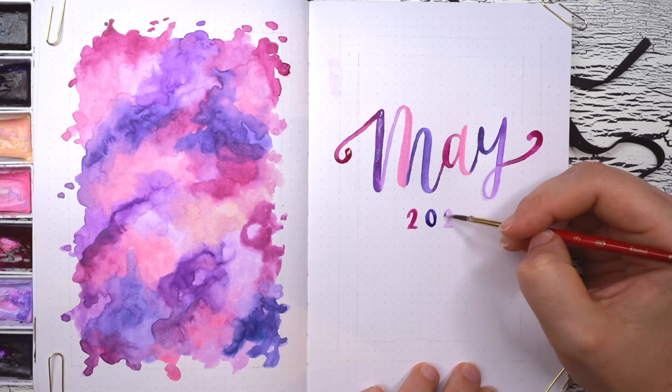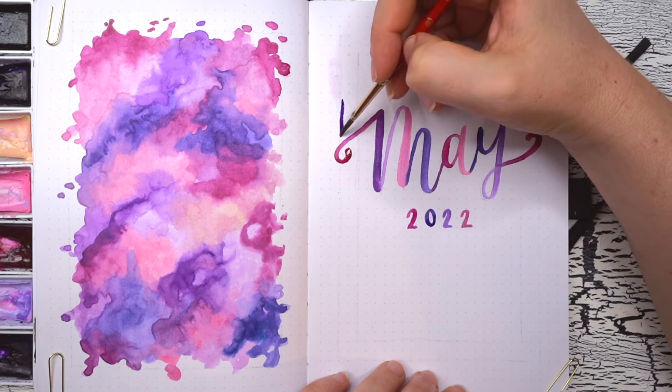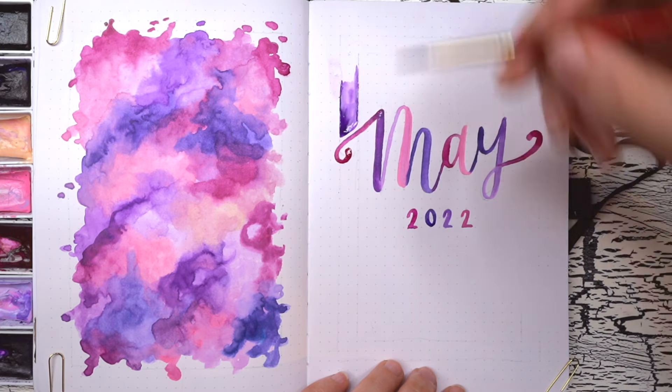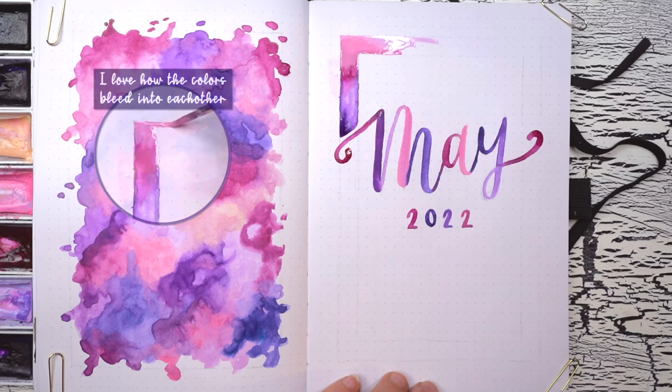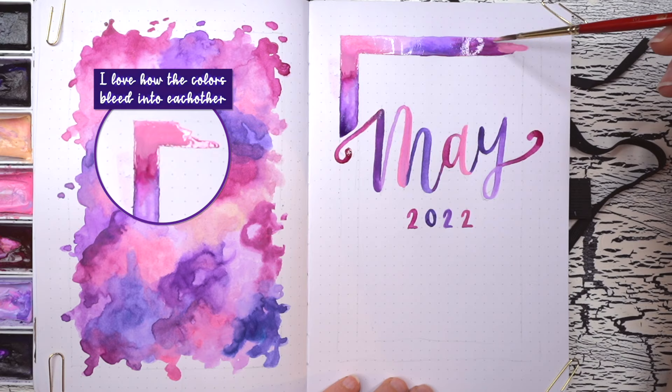As usual, the watercolors I'm using are from the Kuretake Gansai Tombi set that I have linked in the description down below. And the color numbers I used here starting at the bottom are number 38, 13, 37, 14, 12, 139, and finally number 66.